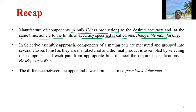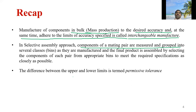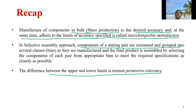In the selective assembly approach, components of a mating pair are measured and grouped into several classes as they are manufactured. The final product is assembled by selecting components of each pair from the appropriate bins to meet the required specifications as closely as possible. No component is manufactured to the exact size due to variations in the manufacturing process. The component may be produced within the upper and lower limits only, and the difference between these limits is termed the permissible tolerance.